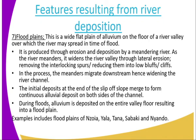The seventh feature is the flood plain. This is a wide plain of alluvium on the floor of the river valley over which the river may spread in times of floods. It is produced through erosion and deposition by a meandering river. As the river meanders, it widens the river valley through lateral erosion, removing the interlocking spurs, reducing them into low bluffs or cliffs. In the process, the meanders migrate downstream, widening the river channel. The initial deposition at the slip-off slopes merge to form a continuous alluvium deposit on both sides of the channel, which we refer to as the flood plain.